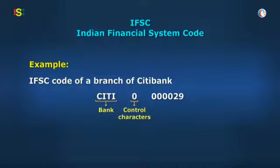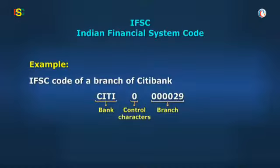These six digits are unique to every branch. As in the case above, the last six digits identify a particular branch, i.e., 0000029. Another branch of the same bank in the same city would have a different code, say CITI0000028.